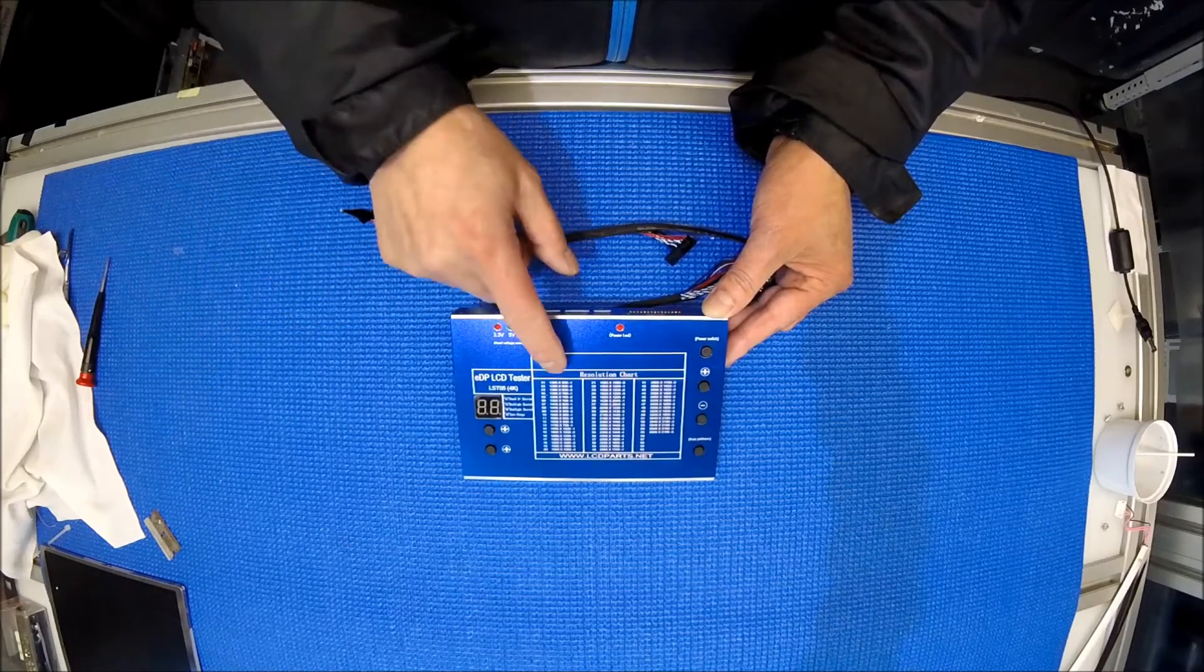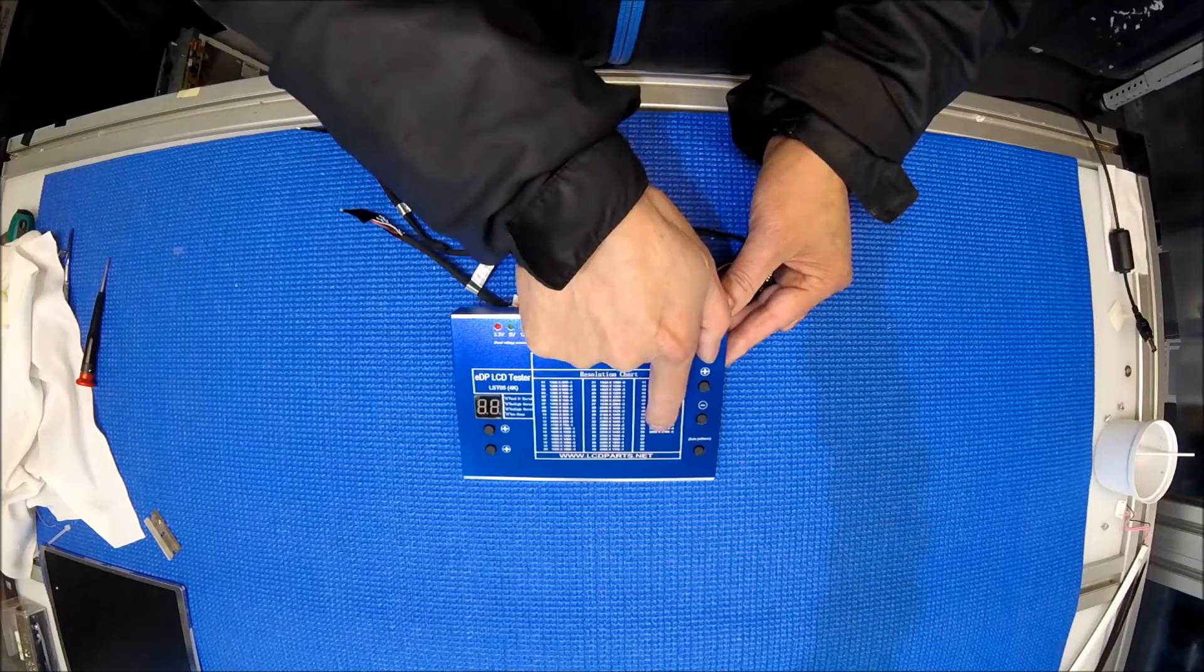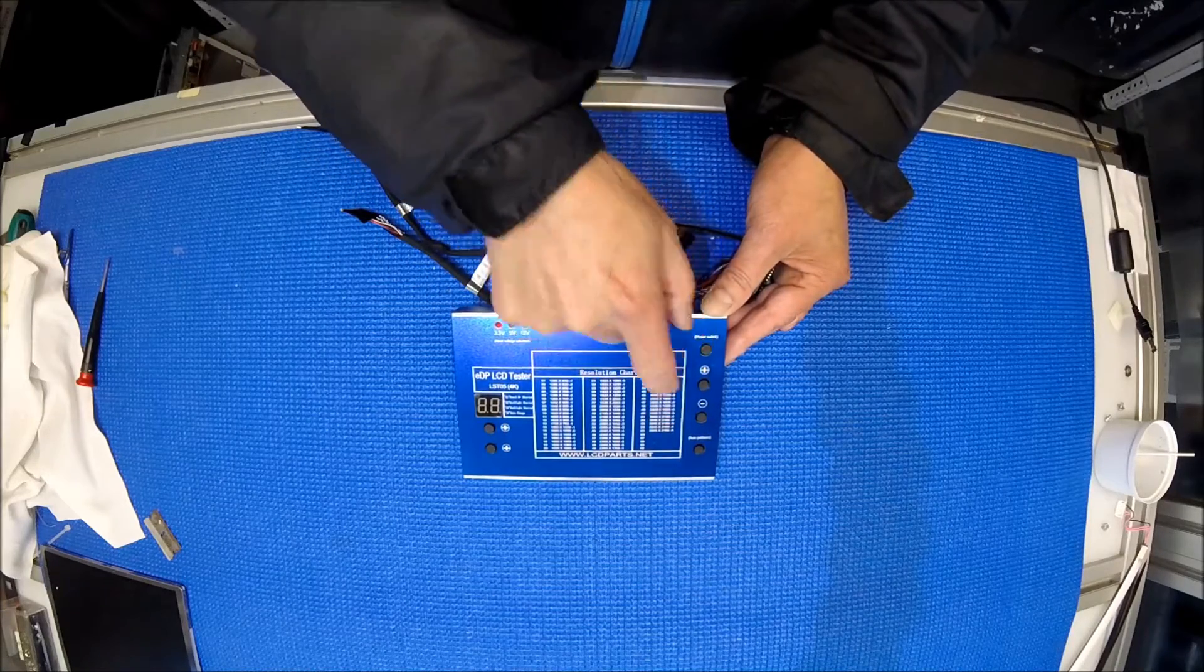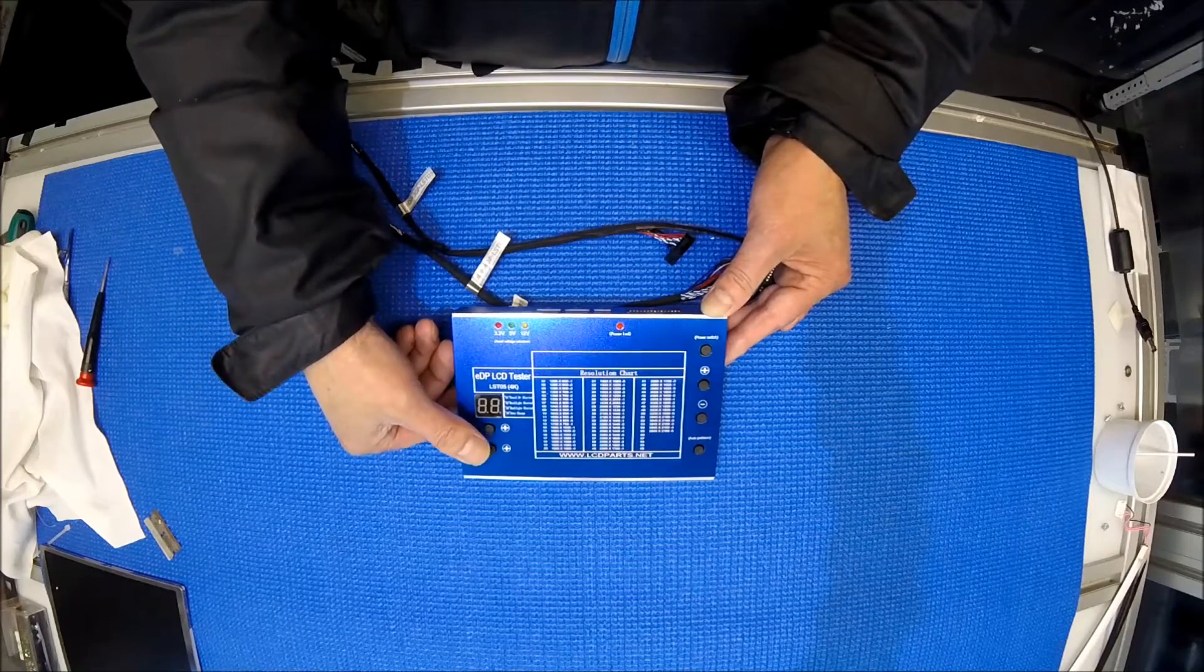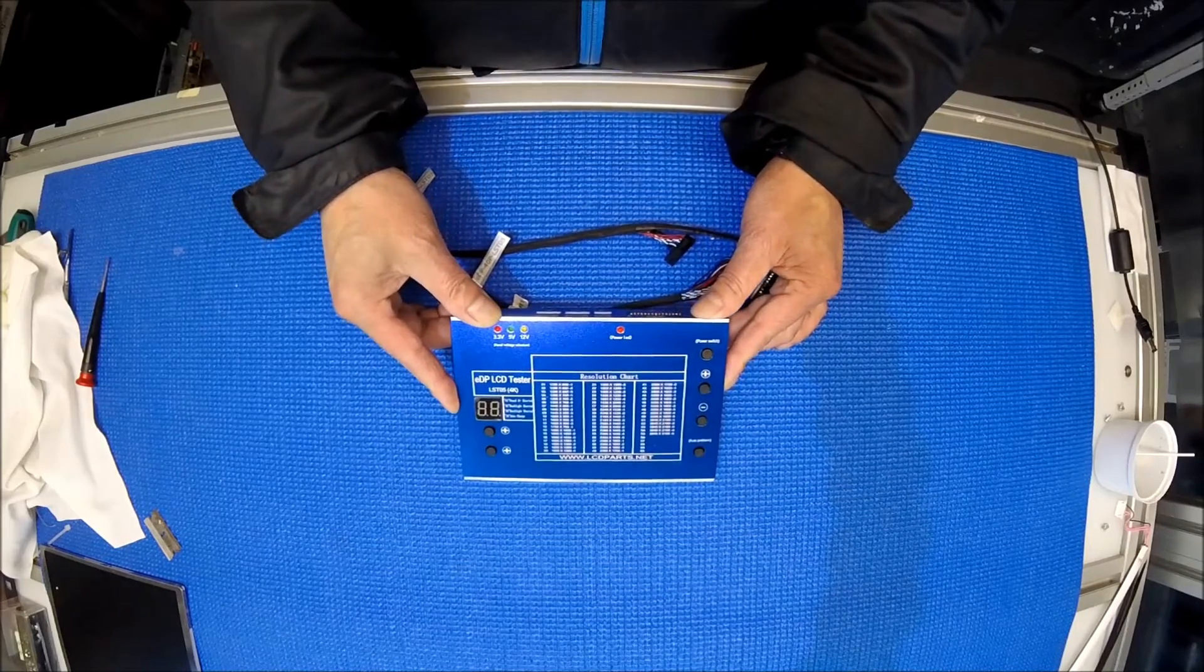Especially when you test the pattern mode 01, and then your next screen is on mode 55, which is 3840 by 2160. If you change one digit at a time, it's going to take forever. So version 2 solves these issues.